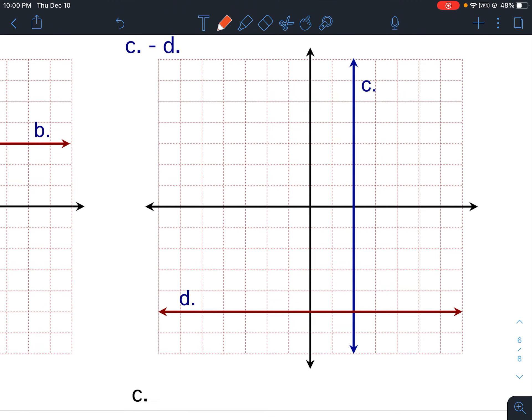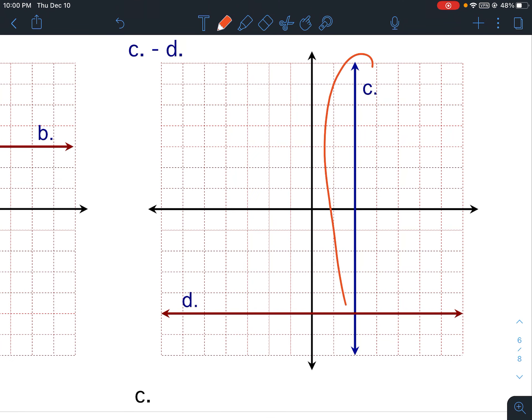Alright, so for C and D, let's start with C. What type of line is C?